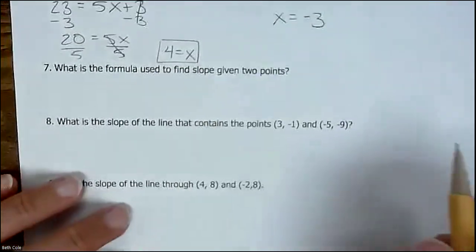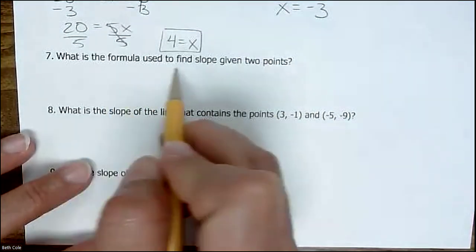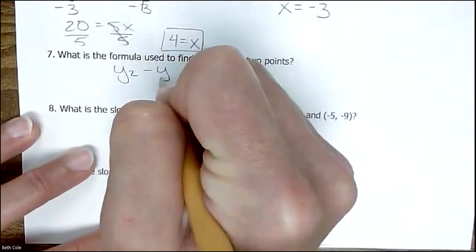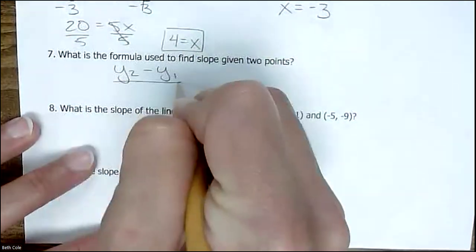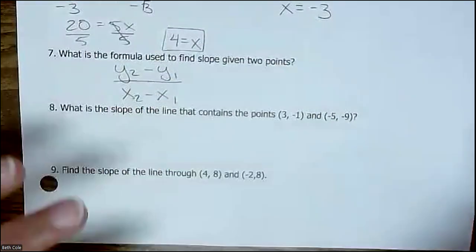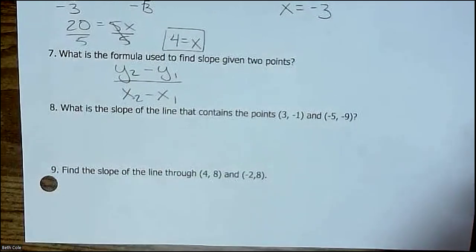Now we're moving on to other stuff. What is the formula used to find slope? You just need to know this formula: it's y2 minus y1 over x2 minus x1. You subtract your y values, subtract your x values, you just need to memorize that.